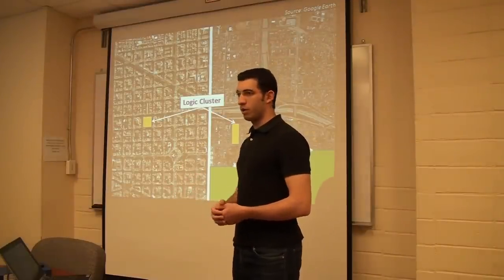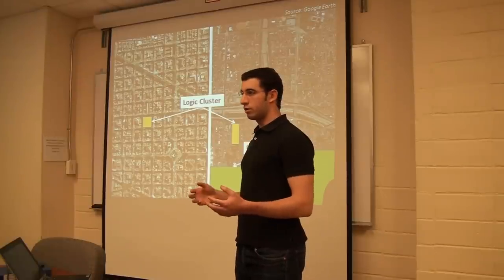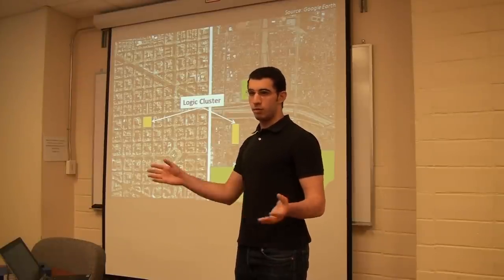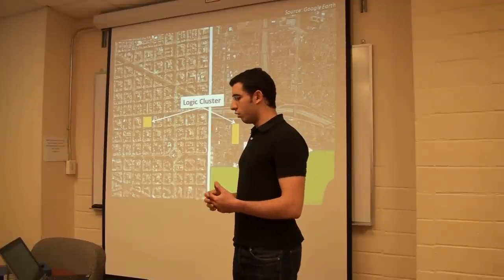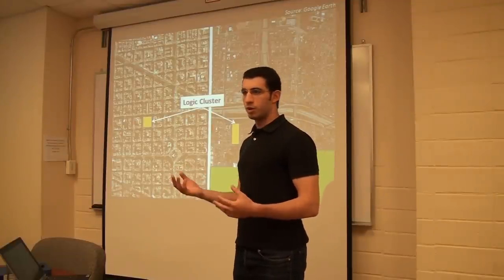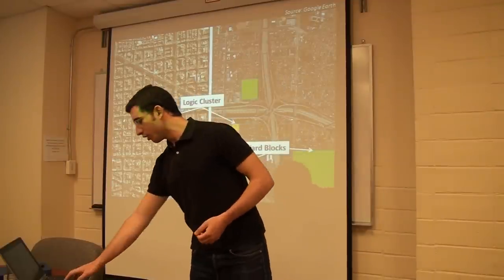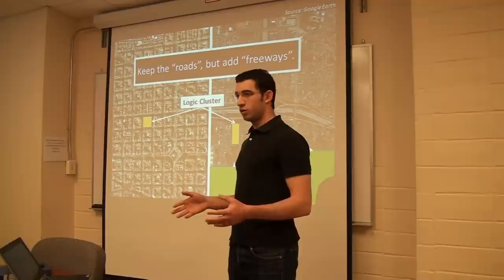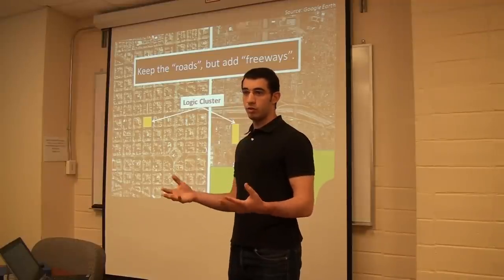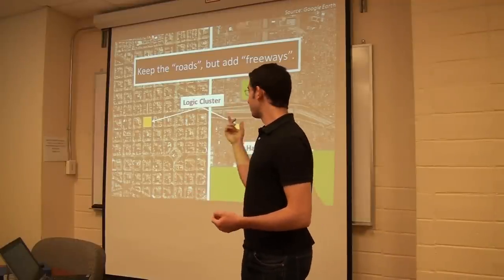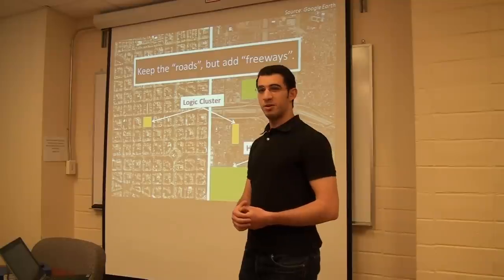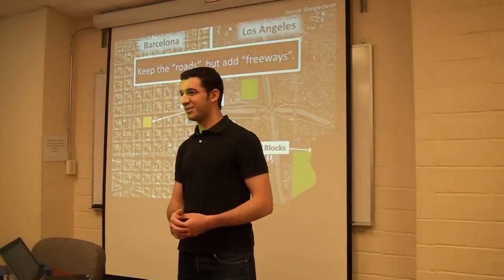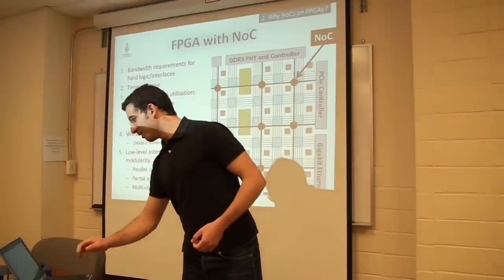We also have hard interfaces like airports and train stations. To connect all that, narrow streets are no longer sufficient, even if very long — you need superhighways with dynamic switching. We want to keep the roads but augment them with freeways to handle the extra traffic. By the way, can anyone guess where those two pictures are from? That's Barcelona and that's Los Angeles.